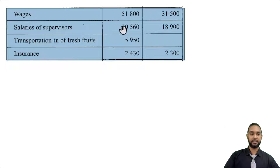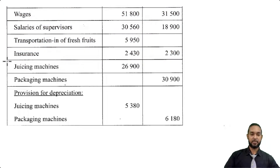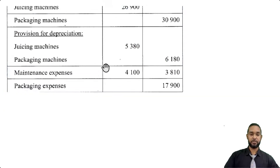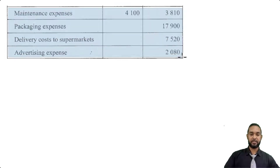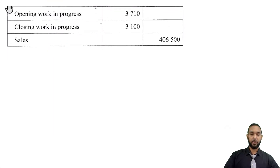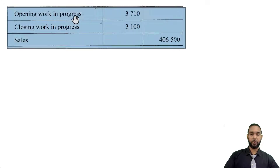We have wages for both entities, salaries of supervisors, transportation in of fresh fruits — which is carriage inwards — and a figure only for Glen, none for Roy. Then we have insurance. There are also non-current assets: juicing machines for Glen, packaging machines for Roy, and provision for depreciation on those machines. That's followed by maintenance for both entities, packaging, delivery, and advertising only for Roy. At the tail end, we see opening work in progress and closing work in progress only for Glen, because Glen is the entity making the juices, whereas Roy is simply buying and repackaging fruits to sell. And there's also a sales figure.